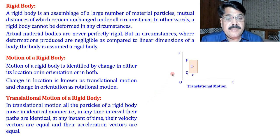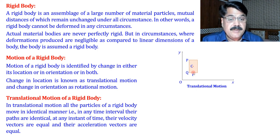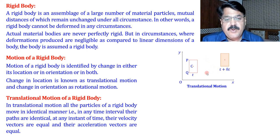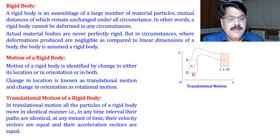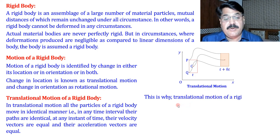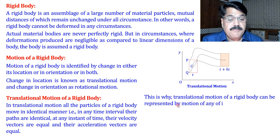Here a rectangular plate is shown with corners P, Q, and center C. At time t the plate is at one position; at time t + Δt it reaches another. The path of the mass center and the paths of all corner particles have the same shape. This is why translational motion of a rigid body can be represented by the motion of any one of its particles.